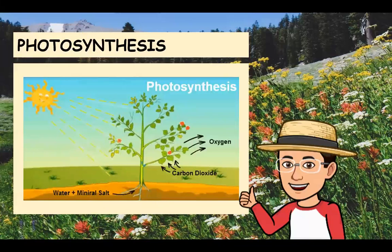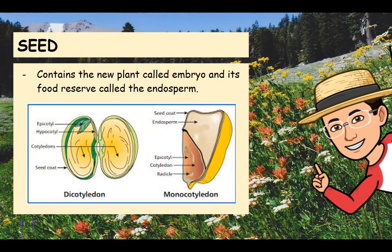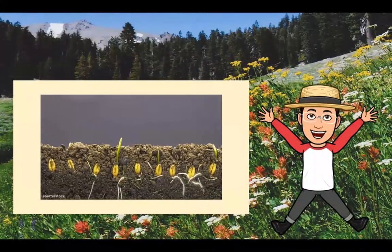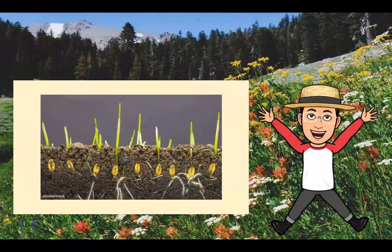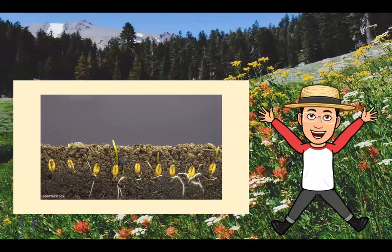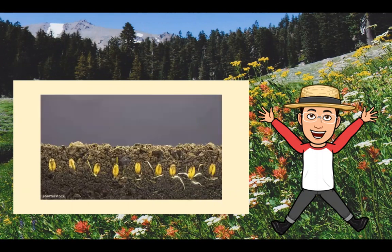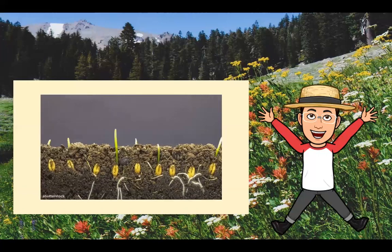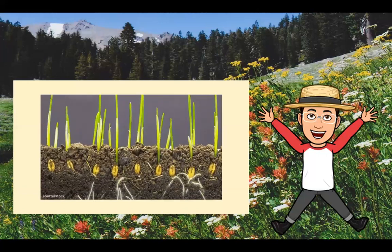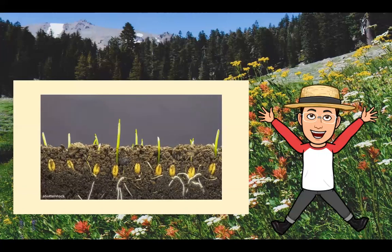Most plants start out as seeds. The seeds contain the new plant called the embryo and its food reserve called the endosperm, and these parts are protected by the seed coat. The seed starts to grow as soon as it comes in contact with water. The water absorbed starts the breakdown of reserved food, which is then used in respiration. Using the released energy, cells divide and enlarge. The root breaks out of the seed coat and moves towards the soil, absorbing water and nutrients, while the first shoot moves upward towards the light.